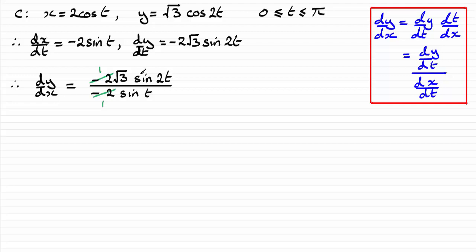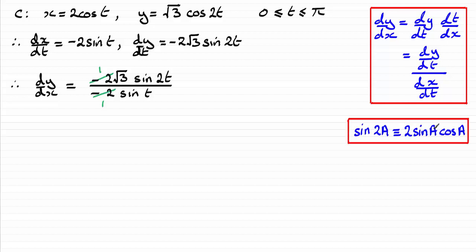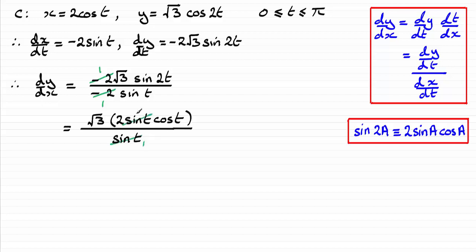We can work with sin 2t. Using the identity sin 2a equals 2 sin a cos a, with a replaced by t, I can write that as root 3 times 2 sin t cos t in place of sin 2t, divided by sin t. The sin t cancels out, leaving us with 2 root 3 cos t, and that's our result.